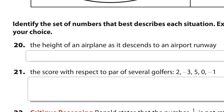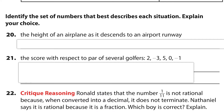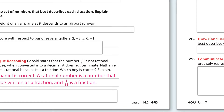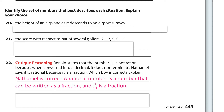Now we need to identify the set of numbers that best describes each situation. The height of an airplane as it descends on an airport runway — the height might be 1,000 feet, or 500 feet, or could it be 999.9 feet? It most certainly could. Once you introduce that decimal, we're talking about rational numbers, beyond integers and whole numbers.